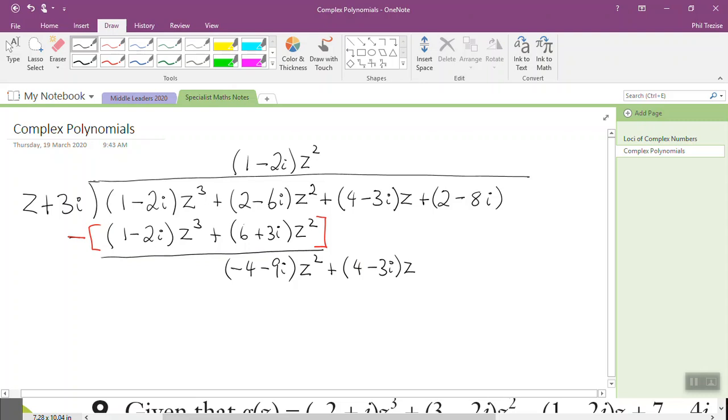This is where the process repeats. I look at the first term I have here, a number by z-squared, divided by z. So it is the number negative 4 minus 9i z.